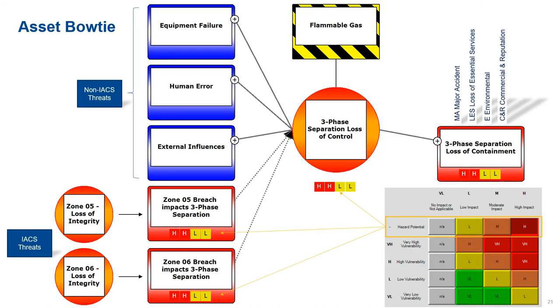Carrying forward the physical or the asset side of things, the zone five breaches could lead to a loss of control or loss of containment within this particular physical asset. Here we've got our three-phase separator. We've got our IACS threats. We've also got our conventional or non-IACS threats caused by equipment failure, corrosion, human error, external influences like dropped objects.